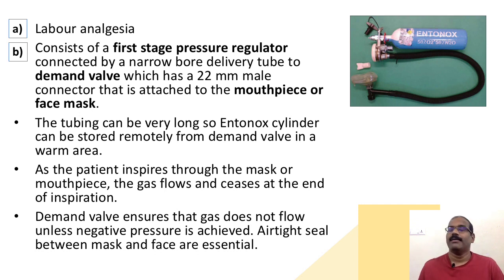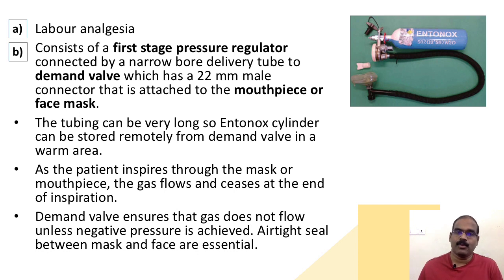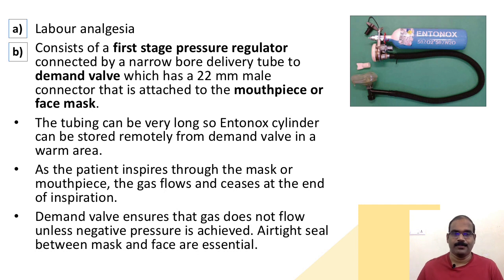The demand valve has a 22 male connector attached to the mouthpiece or face mask. The advantage is the tubing can be very long, so the Entenox cylinder can be placed remotely from the demand valve in a warm area. As the patient inspires through the mask or mouthpiece, the gas flows and ceases at the end of inspiration, so the demand valve ensures gas does not flow unless negative pressure is achieved. An airtight seal between the mask and face is essential.